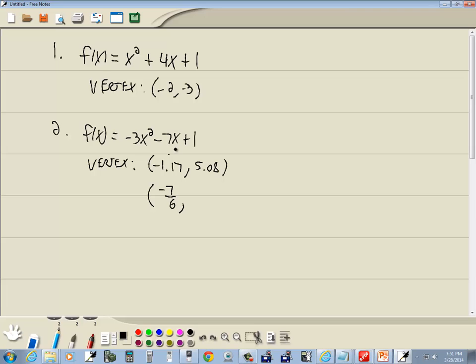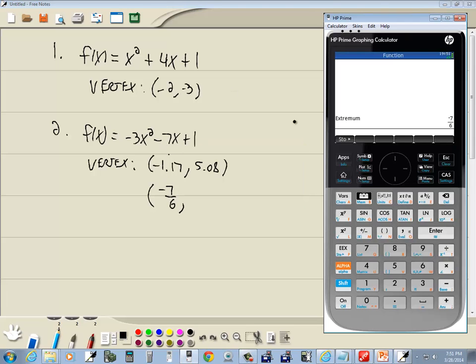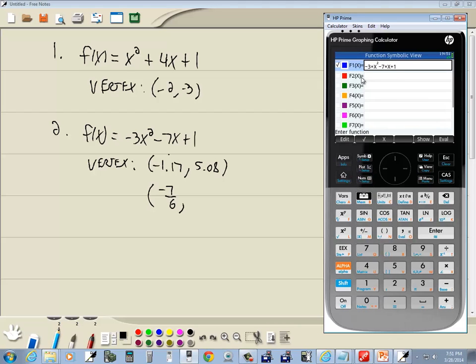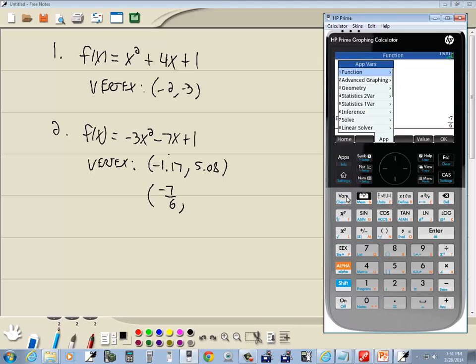Now this is the x part. To get the y part, we'd plug that back up in our original problem. And how we can do that is if I go back to symbol, notice my function is in F1. So keep that in mind. So I'll press home, go back here. I'm going to do vars, I want to do function, so I do 1 for function. I want to choose symbolic, so I'll press the 2 that's in front of it. And then I want to choose 1 for F1.